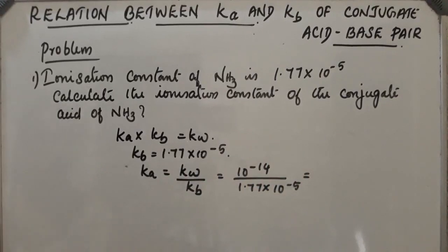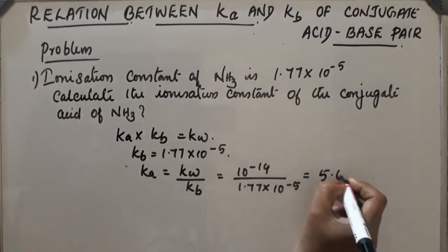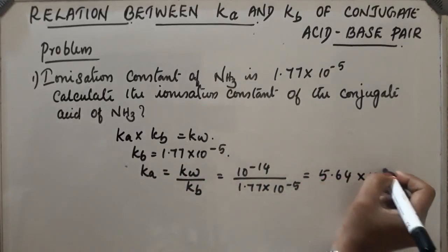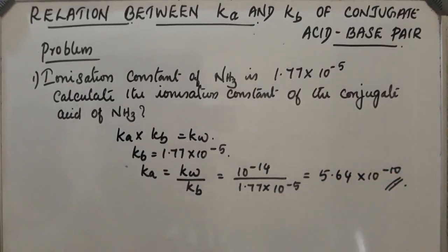This will be the value. After calculation, we will get the value 5.64 × 10^-10. This is Ka. Like this we can calculate Ka, that is the ionization constant of the conjugate acid of ammonia.